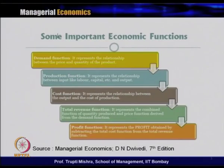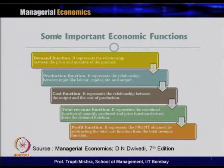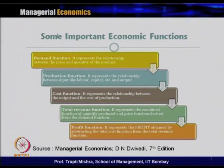Till now our discussion has focused on the demand function. But apart from the demand function, there are other topics where we use the relationship between two variables in functional form, like the production function, which represents the relationship between inputs like labor and capital with output, and the cost function, which is the relationship between output and the cost of production. Then we have the total revenue function, which combines quantity produced and price based on the demand function.